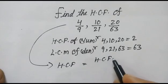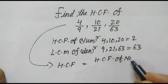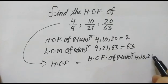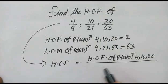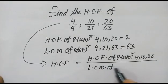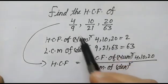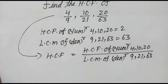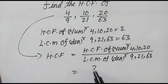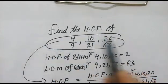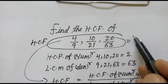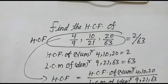Now we apply the formula: HCF of fractions = HCF of numerators divided by LCM of denominators. So that is HCF of 4, 10, and 20 over LCM of 9, 21, and 63, which gives us 2 over 63. So the HCF of all these fractions is 2/63.